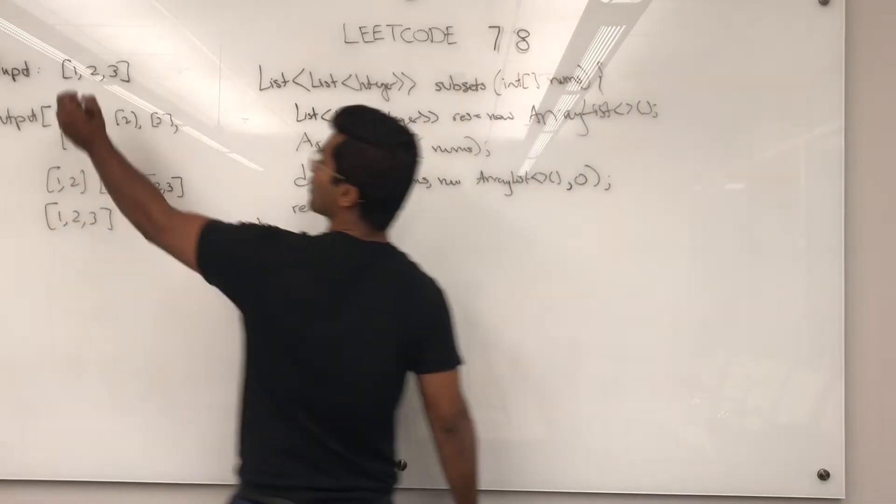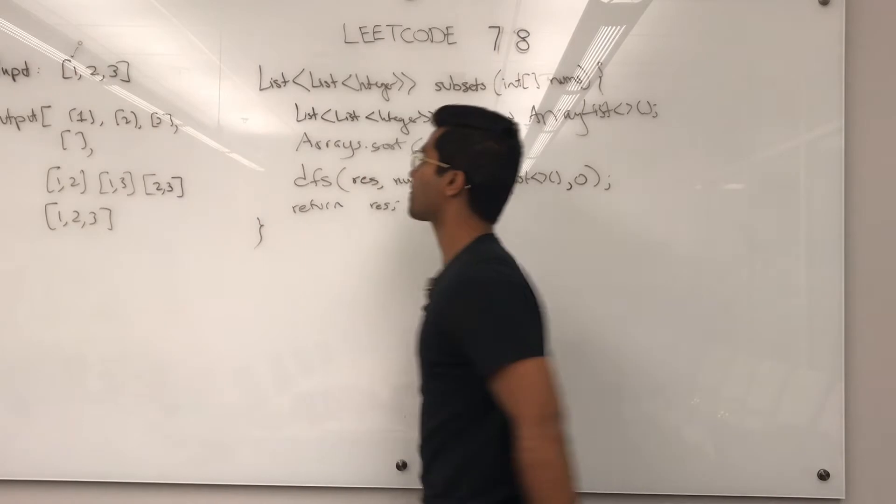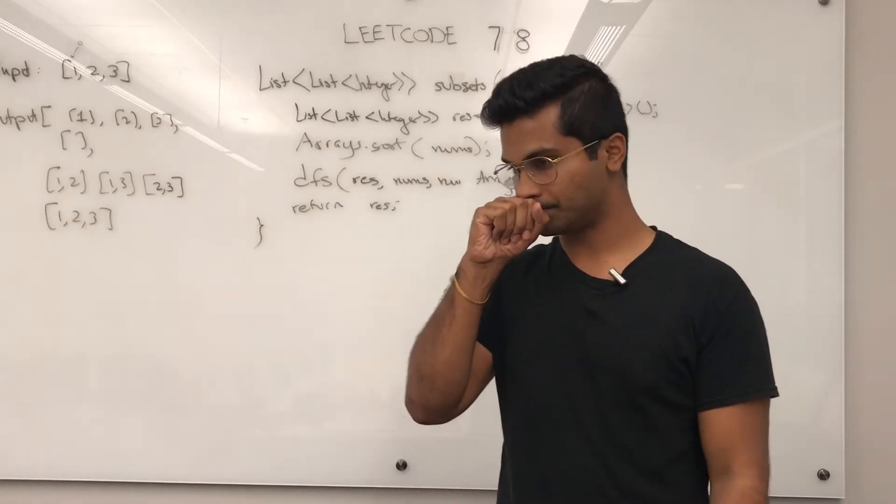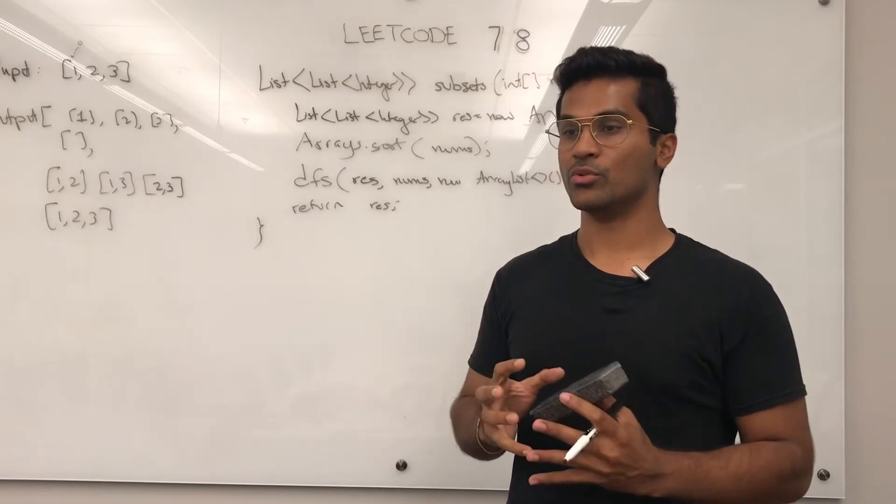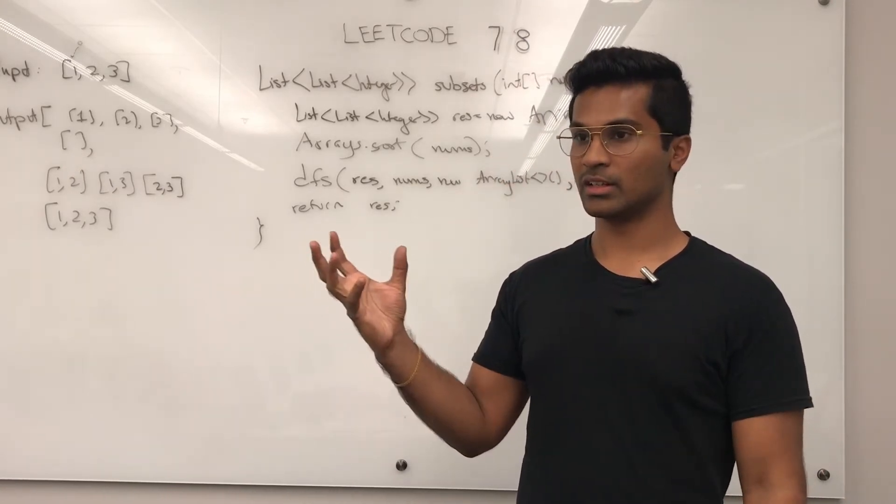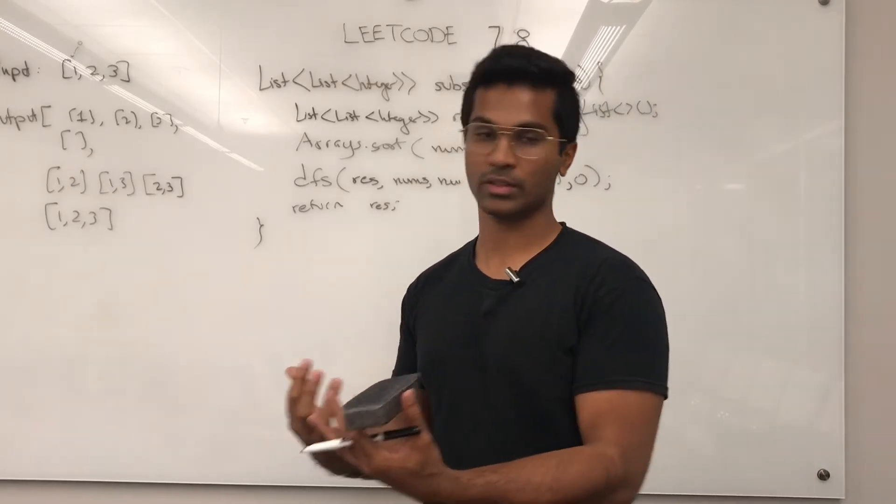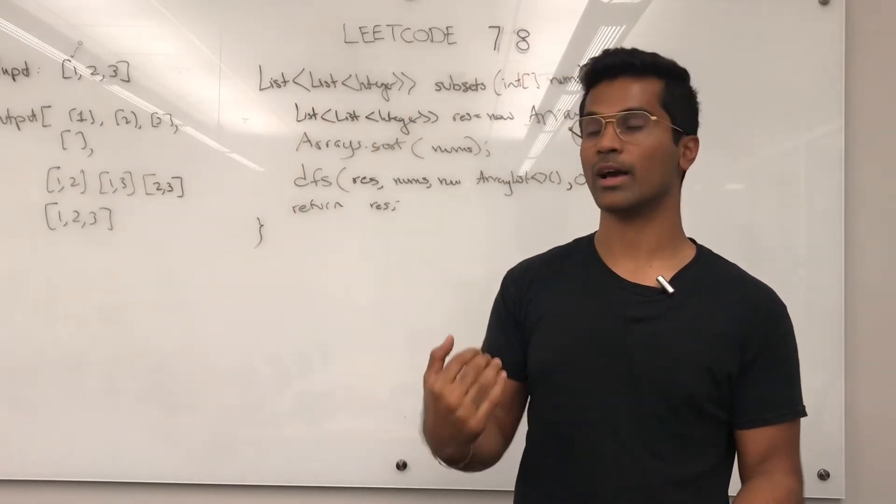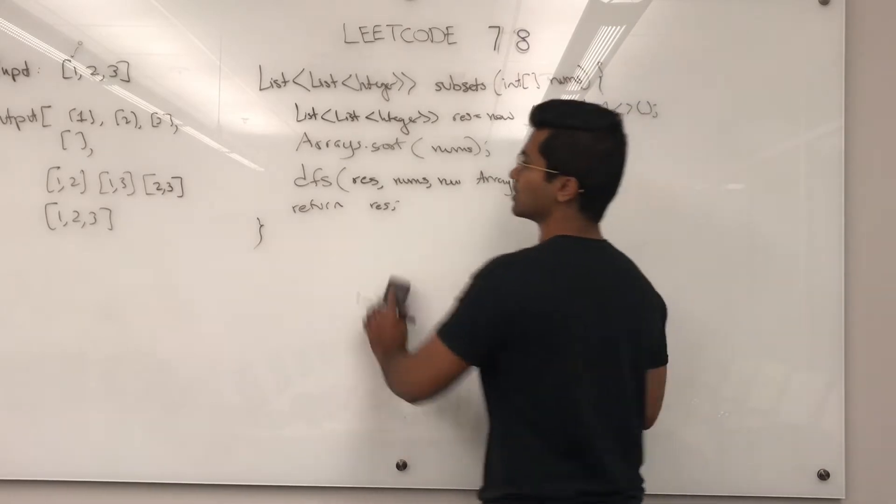So this is going to populate res and we're just going to return res when it's done. The reason we pass in zero is because we want to start with the first index and general backtracking works like this. You add an element, you recursively call around the data structure, and then once that function returns you remove the element that you added.